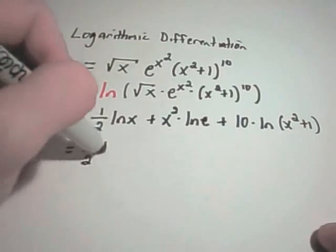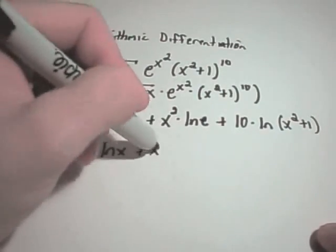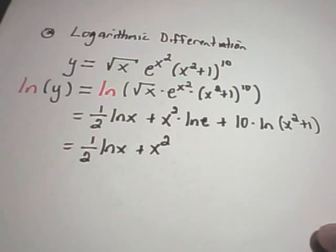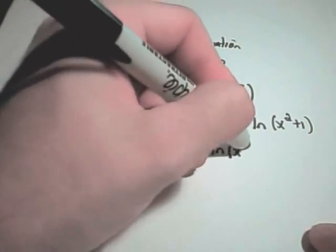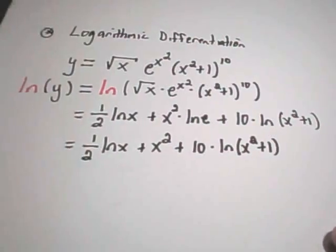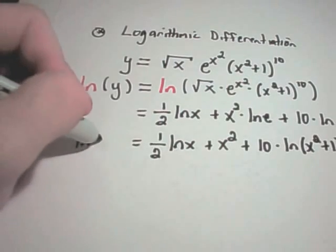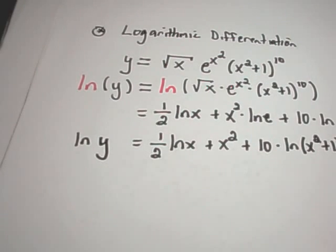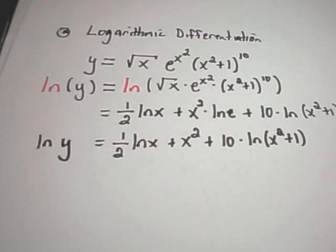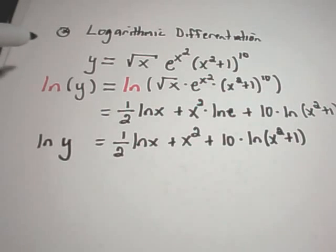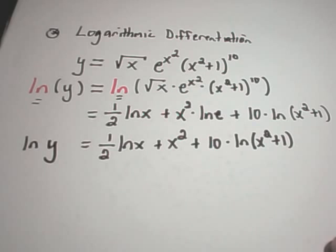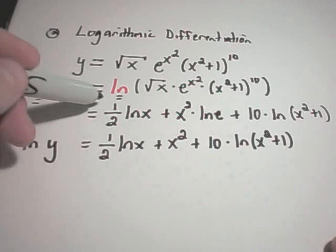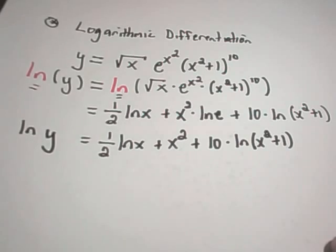I can clean this up a little more. This simplifies to one-half ln of x plus x squared, since the natural logarithm of e equals one, plus ten times ln of x squared plus one. On the left side, we can't forget we have ln of y now, not just y. The only thing I've really done is introduced natural logarithms and used properties of logarithms to break up my original problem. There's one step I left out — you may want to fill in the details.